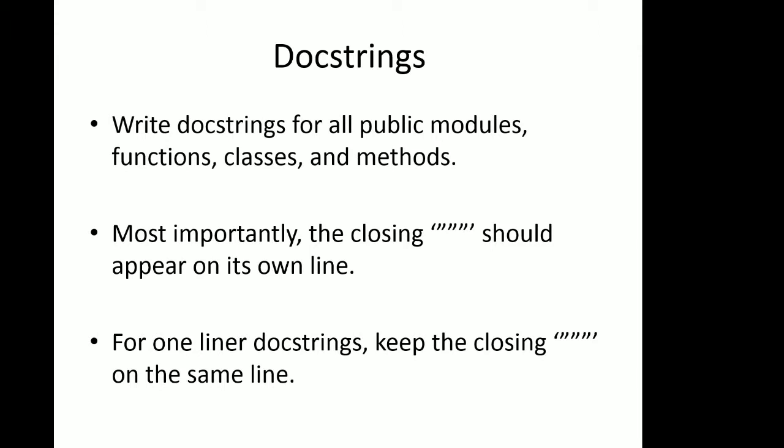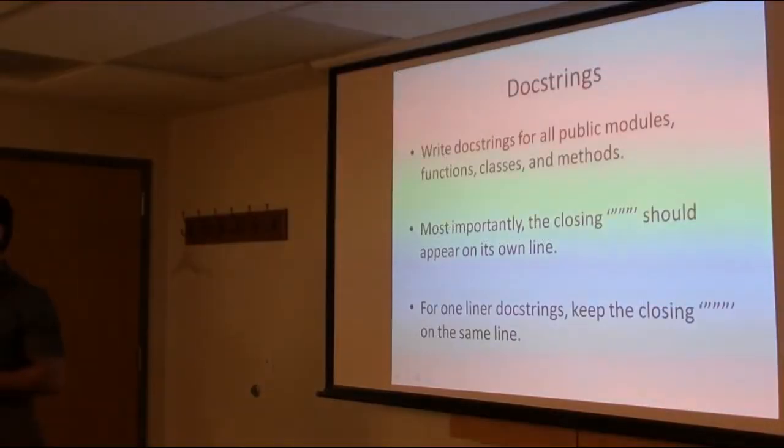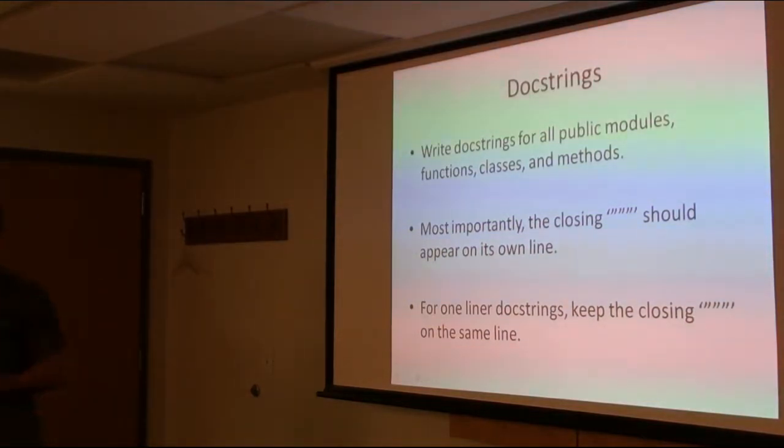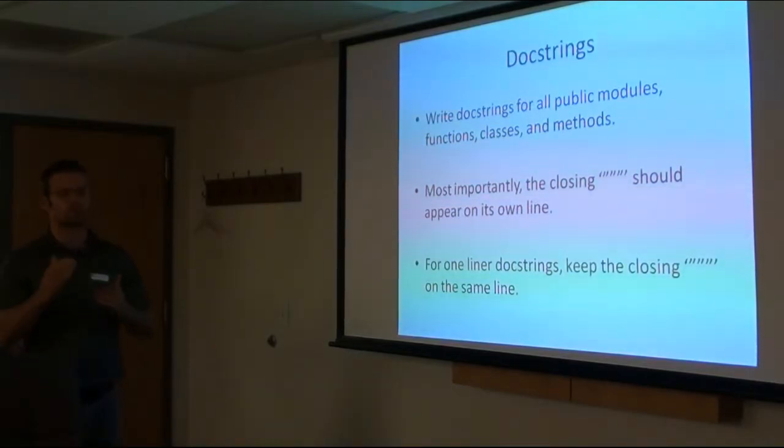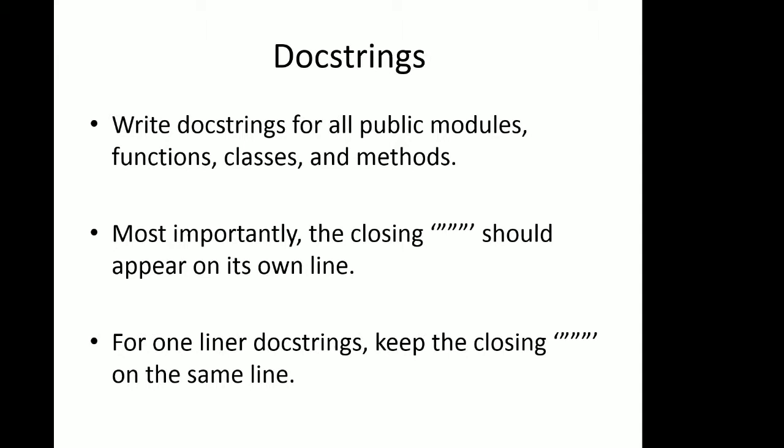Use inline comments — the pound sign next to a line of code — really sparingly because they can be confusing. Regarding doc strings: in Python, any time you define a function, class, or method, you can add a bare string as a statement and it automatically shows up in the documentation for that code. That's why they call it a documentation string, or doc string — it's what shows up when you call 'help' on it. For multi-line doc strings, the closing triple-quote should be on its own line. For one-liners, put it on the same line.